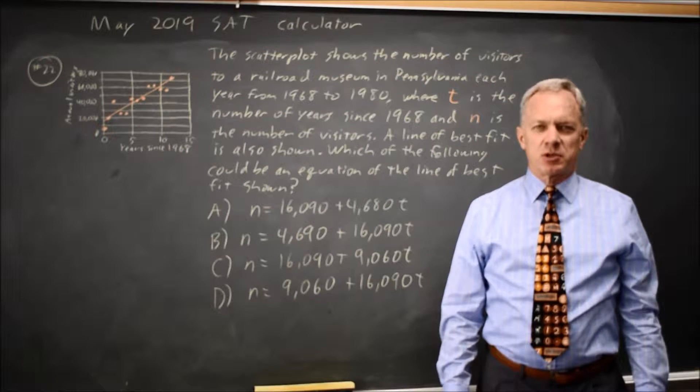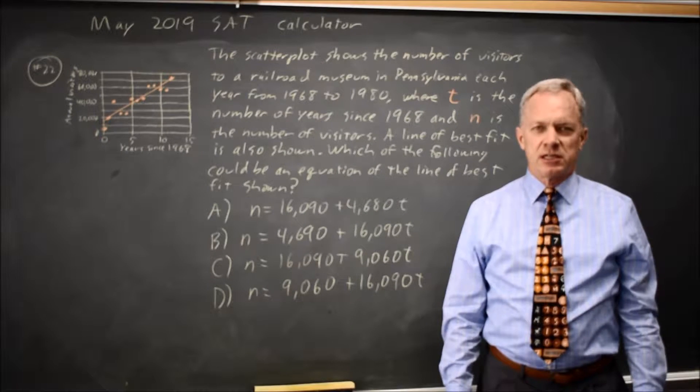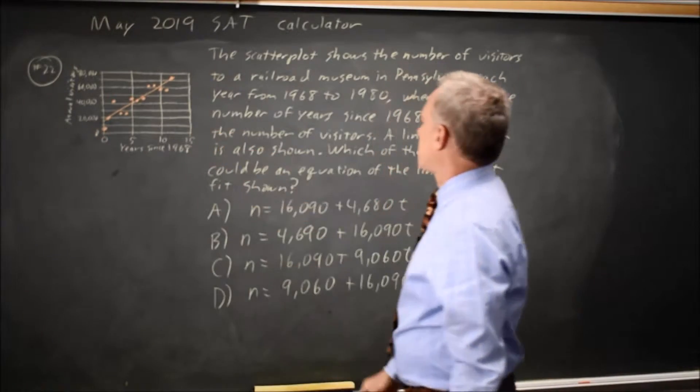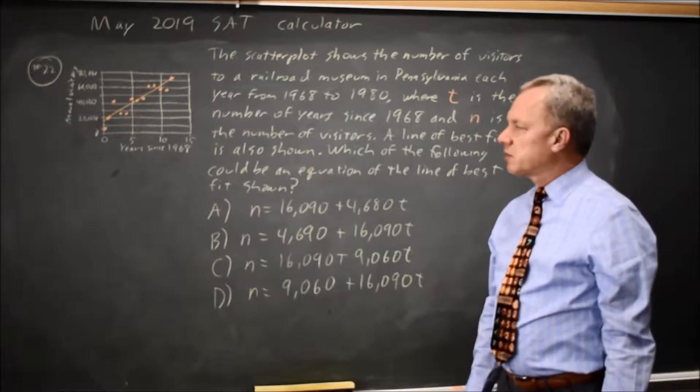This is calculator question number 22 from the May 2019 International SAT. College Board gives us a scatter plot and asks which is the line of best fit.